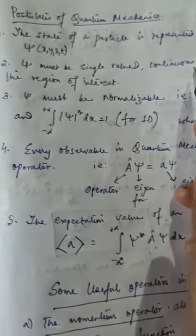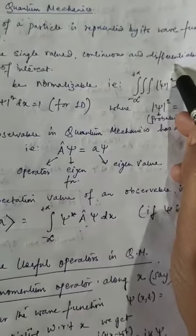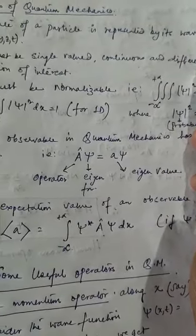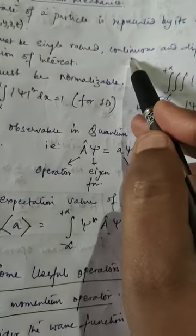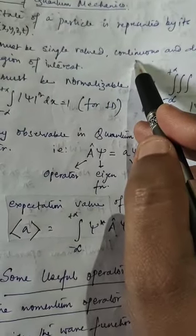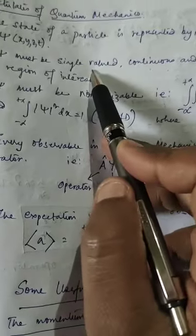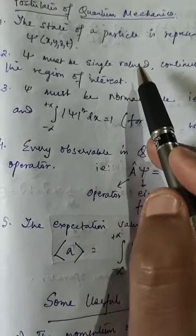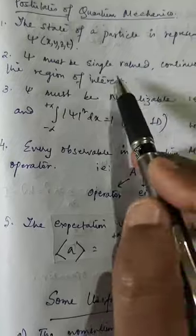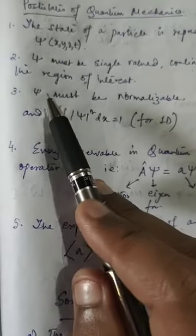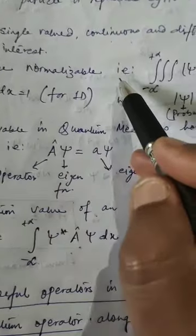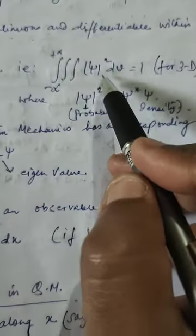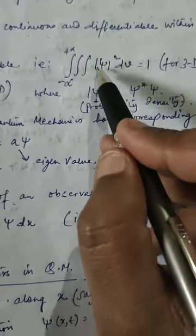Now what do I mean by single-valued, continuous, and differentiable? You know what differentiable means — it must be differentiable within the region of interest. It must be continuous — there must be no discontinuity — and it must be single-valued. Another very important property is that psi must be normalizable.